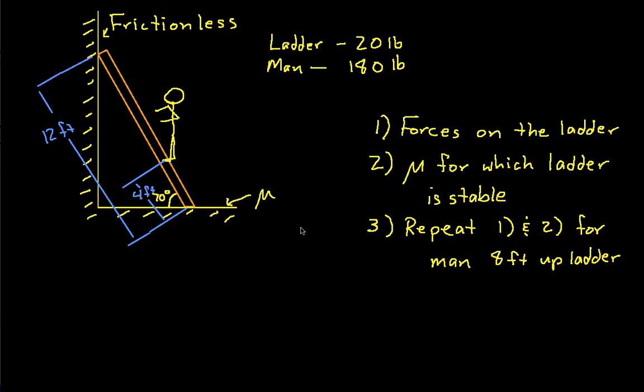The first thing we need to do then is draw a free body diagram of the ladder because that's the body we're going to analyze. So here's the ladder. We have the force exerted by the frictionless wall. Since it's frictionless, it can only exert a force that's normal to the wall. I'll call this F sub B.